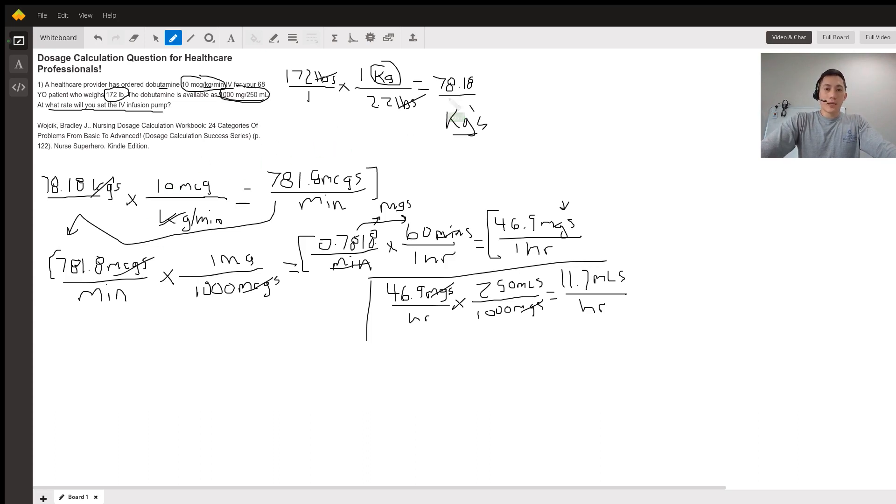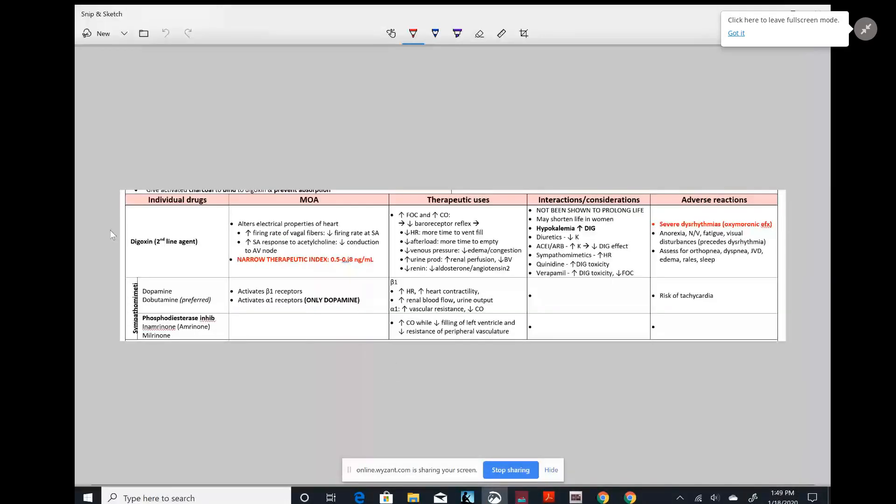I want to look a bit more at dobutamine. I have a resource that breaks down its mechanism of action, therapeutic uses, considerations, interactions, and adverse reactions. It activates beta-1 receptors and alpha-1 receptors, causing an increase in heart rate, heart contractility, and vascular resistance. Its adverse reaction is risk of tachycardia.